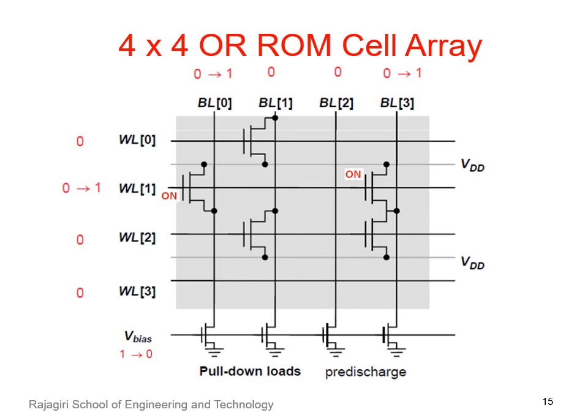A word line is activated by making it equal to 1. As shown in the figure, word line 1 is activated, that is WL1 equals 1. So the transistors connected from word line 1 to bit line 0 and bit line 3 turn on, and these bit lines read the value 1 since they are now connected to VDD. Whereas the other two bit lines — bit line 1 and bit line 2 — which are not connected to word line 1, remain at the value 0. A bit line reads the value 1 if any one of the transistors connected to it is in the ON condition. That is why this cell array is called the OR ROM cell array.